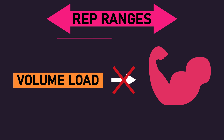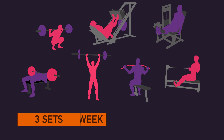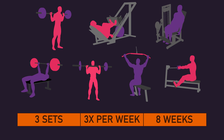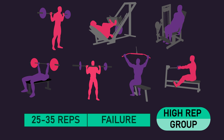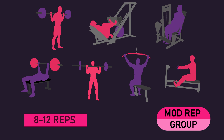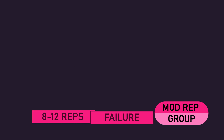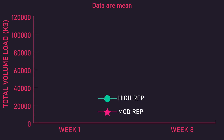Additionally, the rep range research also demonstrates that your ability to increase the volume load you perform over time probably doesn't relate to muscle hypertrophy either. Illustrating this, Schoenfeld and colleagues had a group of men with between 1.5–9 years of training experience perform a range of exercises each for 3 sets, 3 times per week for 8 weeks. One group, who we'll call the high rep group, performed 25-35 repetitions to failure each set. Another group, who we'll call the moderate rep group, performed 8-12 repetitions to failure each set. Both groups attempted to increase the load they could lift within their rep ranges every week.